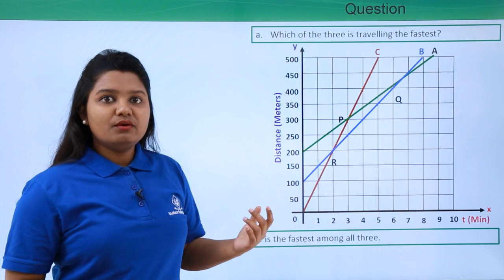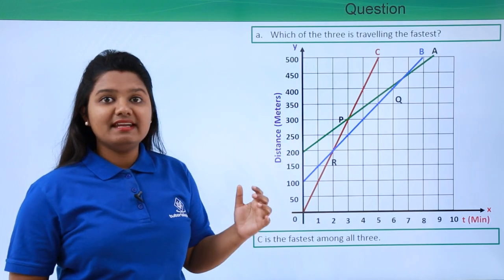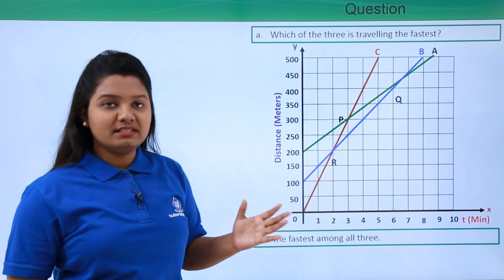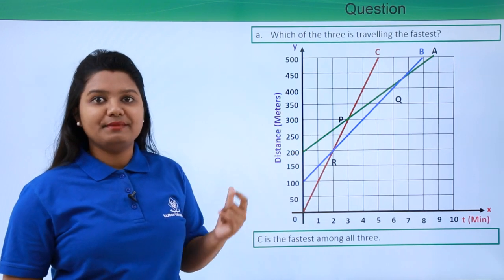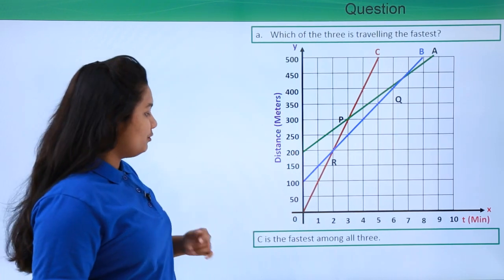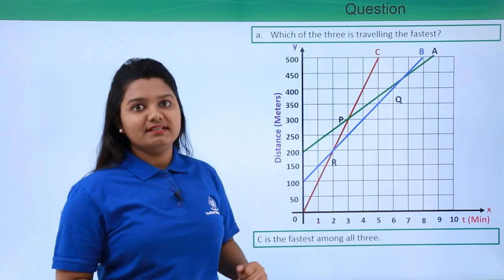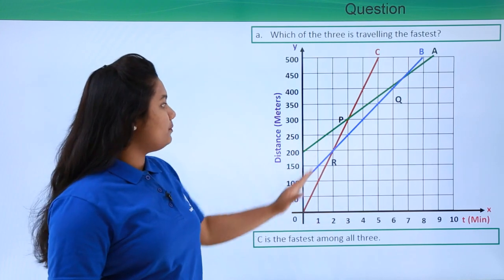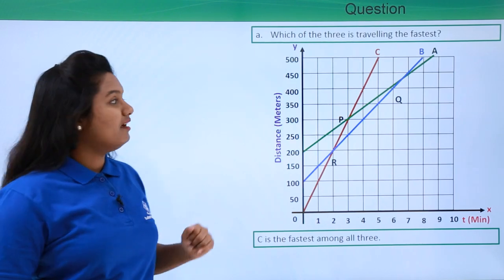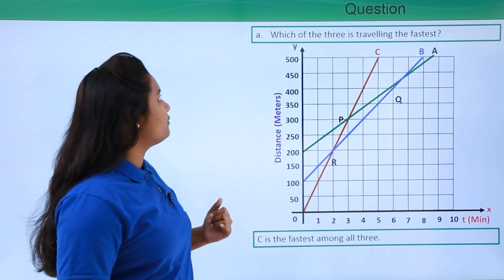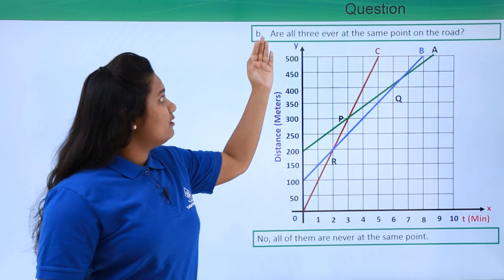So it is certain that C must be moving with the highest velocity among all three bodies — A, B, and C. Our answer is: C is the fastest among all three, since it has the steepest distance-time graph.